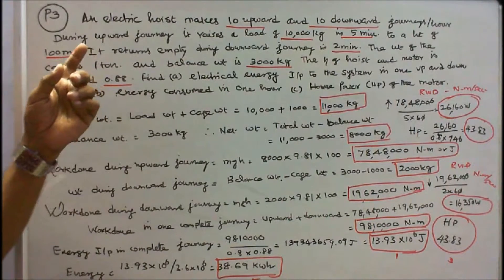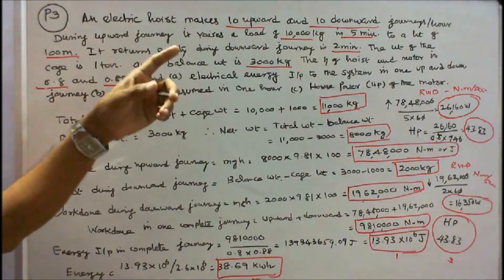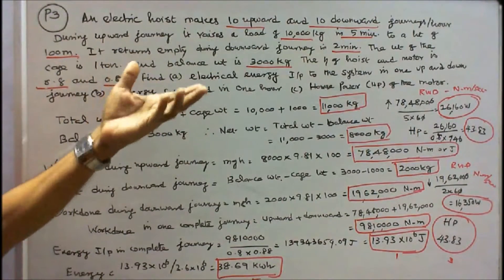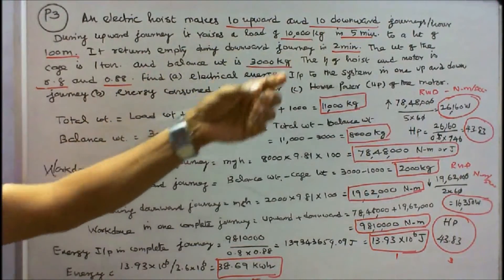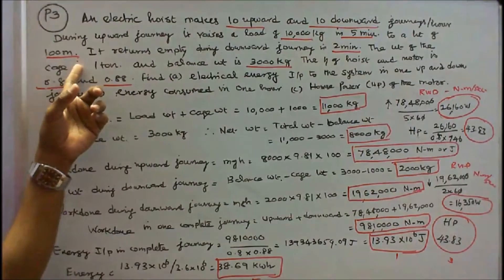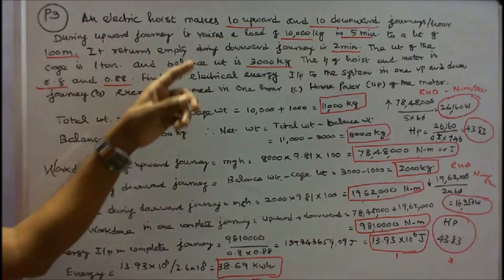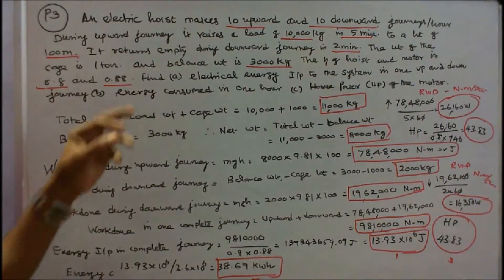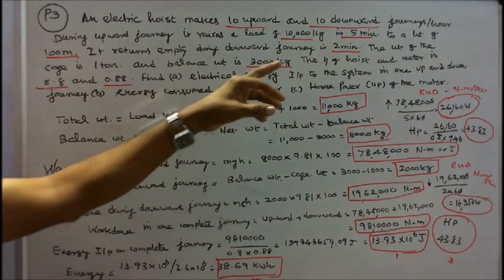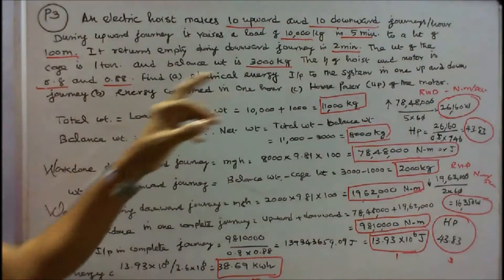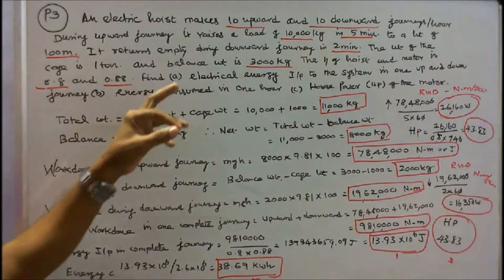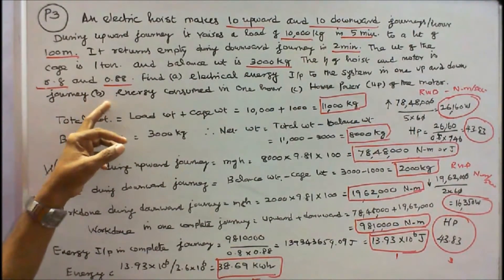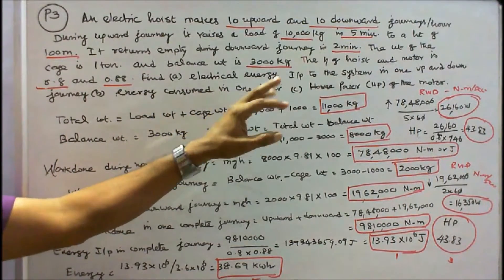Problem 3: An electric hoist makes 10 upward and 10 downward journeys per hour. During upward journey it rises a load of 10,000 kg in 5 minutes to a height of 100 meters. It returns empty during downward journey in 2 minutes. The weight of the cage is 1000 kg, balance weight is 3000 kg. Efficiency of hoist is 0.8 and motor is 0.88. Find: A) electrical energy input in one up and downward journey, B) energy consumed in 1 hour, C) shaft power of the motor.